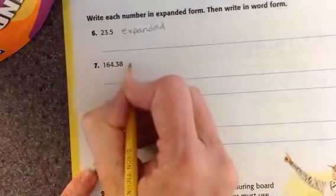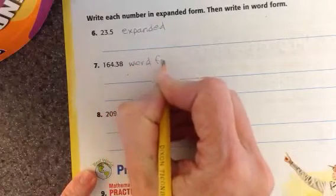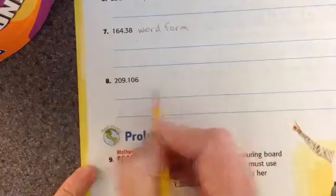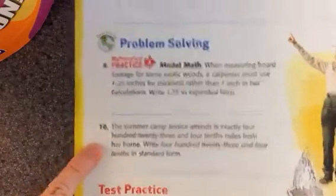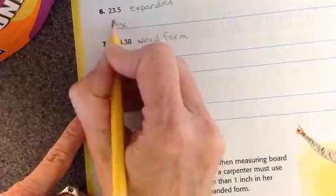And this one, I want you to write it in word form. And number eight, you don't need to do. Looking at number nine, remember when you do expanded form, you're going to take the first digit and then times it by the place that it's in.